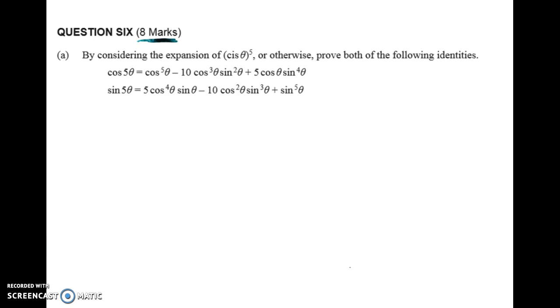So the question goes like this: By considering the expansion of cis theta to the power of five, or otherwise. Now unless you're a genius, just always use their hint right, so it's always going to be probably the easiest way to get there. You could use some compound angle stuff here but I haven't tried that. So we have to prove the following two identities: the first one is that cos of five theta equals all of this, and the second one is sine of five theta. So here are the kind of intuitive things I think about when I see that question.